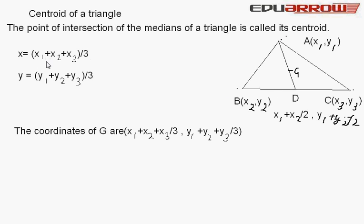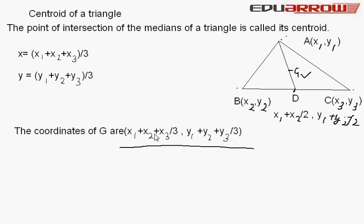x is equal to (x1 + x2 + x3) / 3 and y is equal to (y1 + y2 + y3) / 3, where the centroid is this point and the median is this point. The coordinates of G are represented as (x1 + x2 + x3) / 3 and (y1 + y2 + y3) / 3.